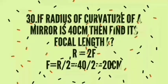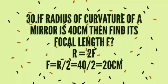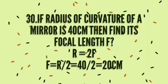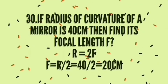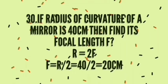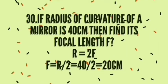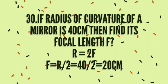If radius of curvature of a mirror is 40 centimeters, then find its focal length f. Use r equal to 2f formula. By transposing it, we can write f equal to r by 2, substitute r equal to 40 centimeters, cancel it by 2, then focal length is 20 centimeters is the answer.